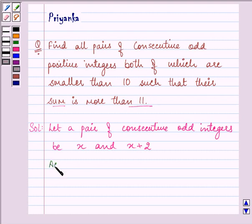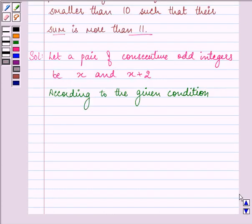According to the condition given in the question, the sum of the pair of positive consecutive odd integers is more than 11. Since it's not given that it can be equal to 11, we will only have this greater than sign. So x plus x plus 2 is greater than 11.